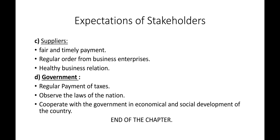They also expect protection of trade union rights. Suppliers, who are one of the external stakeholders, expect a fair and timely payment from a business organization, regular orders from business enterprises, and a healthy business relationship. Government, which is an important external stakeholder, expects regular payment of taxes, observance of the laws and rules of the nation, and cooperation with the government in economical and social development of the country.